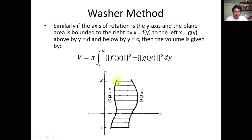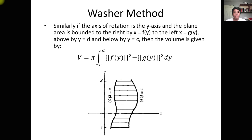Similarly, if the axis of rotation is the Y-axis, we use this formula: V = π ∫[F(y)² − G(y)²] dy, from C to D. Remember: for the washer and disk methods, if the axis of rotation is on the X-axis, use dx; if the axis of rotation is on the Y-axis, use dy. You need to express all terms inside the integral in terms of x (with dx) or in terms of y (with dy).